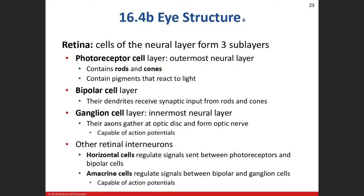There are two types of photoreceptors: rods and cones. Cones — C for color — give us color vision. Each cone cell is specific for one of the three primary colors: red, blue, and yellow. You can make all other colors from those three — blue and yellow make green, red and blue make purple, red and yellow make orange.